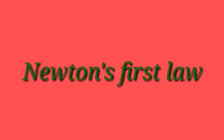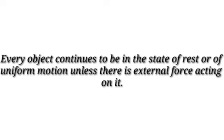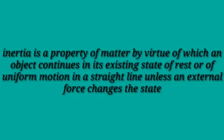Now we are going to see Newton's three laws: Newton's first law, Newton's second law, and Newton's third law. Newton's first law states that every object continues to be in the state of rest or of uniform motion unless there is an external force acting on it. This inability of objects to move on their own or change their state of motion is called inertia — a property of matter by which an object continues in its existing state of rest or uniform motion in a straight line unless an external force changes that state. Depending on the circumstance, there are three types of inertia.